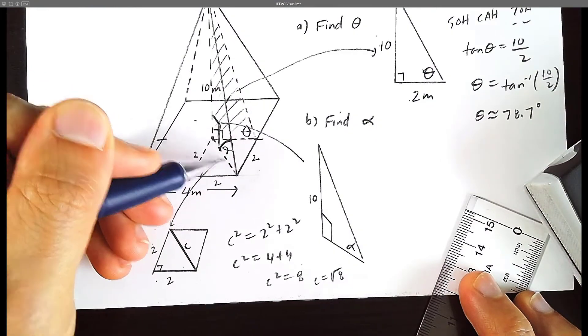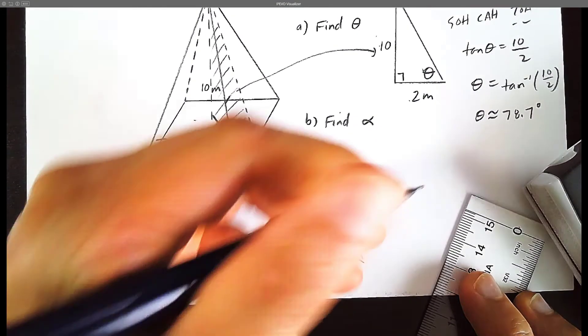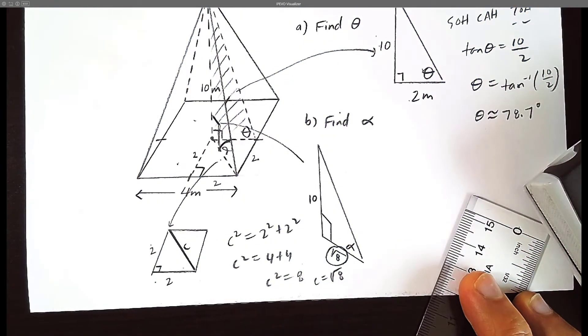So this diagonal here which we're interested in, the bottom, the bottom part here is your c. It's your hypotenuse. It's going to be root 8. So there we have it.